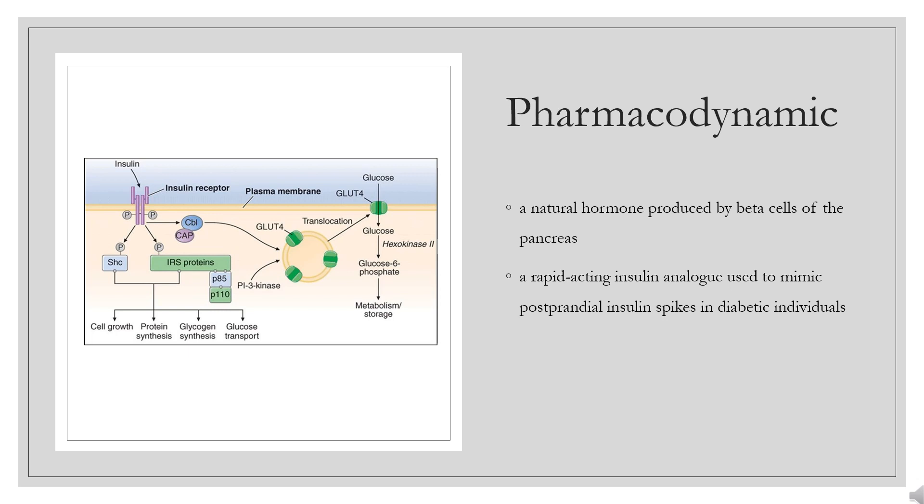Compared to regular human insulin, Insulin Lispro has a more rapid onset of action and a shorter duration of action. Insulin Lispro is also shown to be equivalent to human insulin on a molar basis. One unit of Insulin Lispro has the same glucose-lowering effect as one unit of regular human insulin. Studies in normal volunteers and patients with diabetes demonstrated that Insulin Lispro has a more rapid onset of action and a shorter duration of activity than regular human insulin when given subcutaneously.